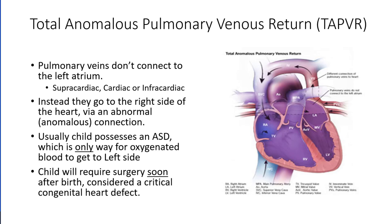Then there is total anomalous pulmonary venous return, where the pulmonary veins don't connect to the left atrium, and can connect in a few different locations. In the supracardiac type, the pulmonary veins come together and form an abnormal connection above the heart, superior to the vena cava, so a mix of oxygen-poor and oxygen-rich blood returns to the right atrium through the superior vena cava. In the cardiac type, the pulmonary veins meet behind the heart and connect to the right atrium via the coronary sinus. In the infracardiac type, the pulmonary veins form abnormal connections below the heart, and a mixture of blood returns to the right atrium from the veins of the liver and inferior vena cava instead of going back to the left atrium.